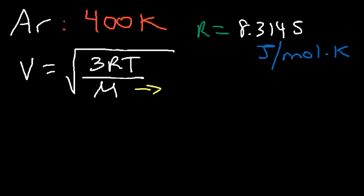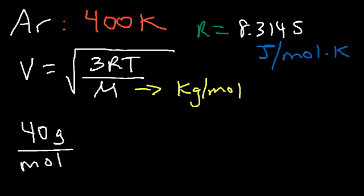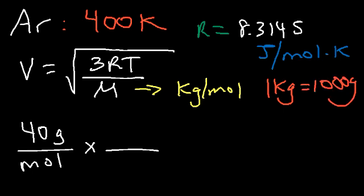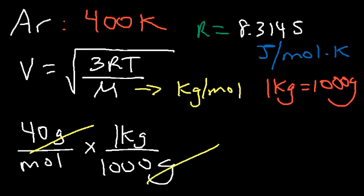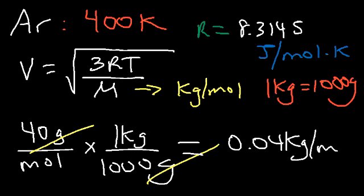Here's what you have to be careful about: the molar mass here is not grams per mole, but kilograms per mole. So argon has a molar mass of 40 — that's 40 grams per mole. For this equation to work, you've got to convert grams into kilograms. One kilogram is equal to 1,000 grams. So 40 divided by 1,000 gives 0.04 kilograms per mole — that's the number we need to plug into the velocity equation.